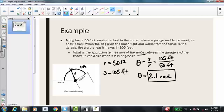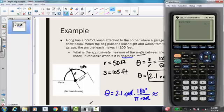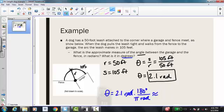Then it asks, what is that in degrees? So if theta equals 2.1 radians, using my conversion factor, I have 180 degrees divided by pi radians. My radians are going to cancel. And using my calculator, I have 2.1 times 180 degrees. Don't forget to divide by pi. And we get theta is approximately 120.3 degrees.